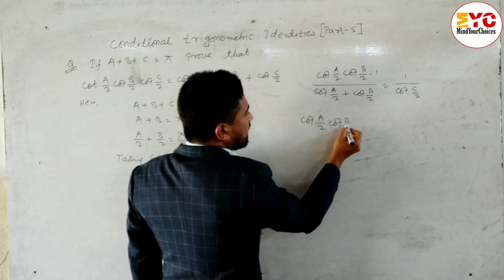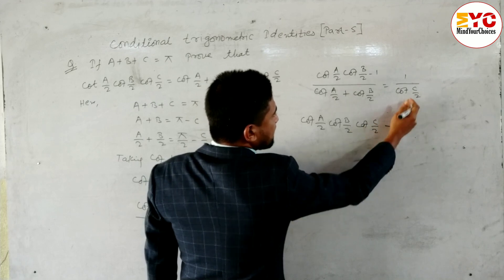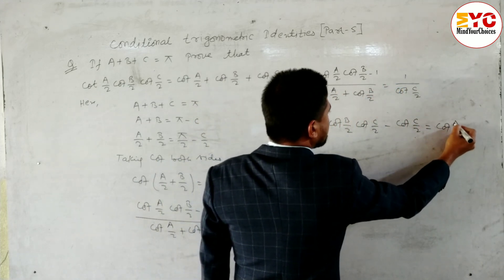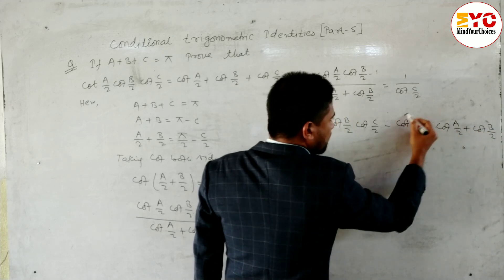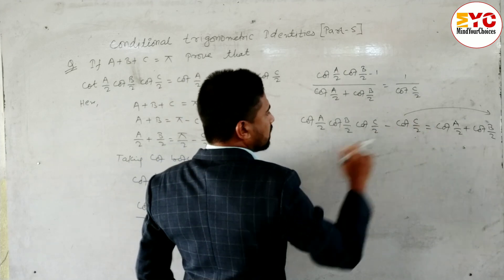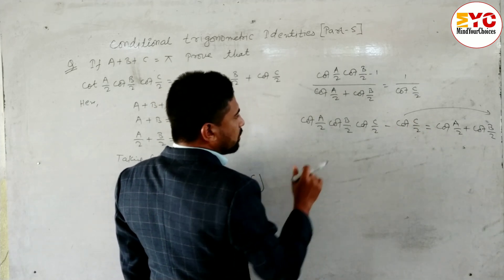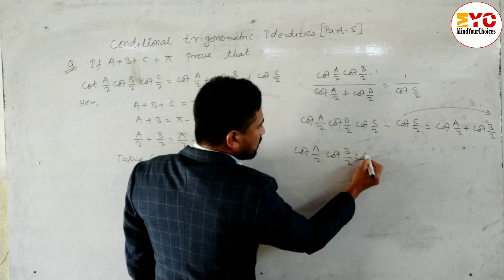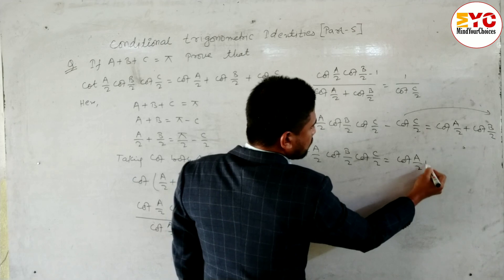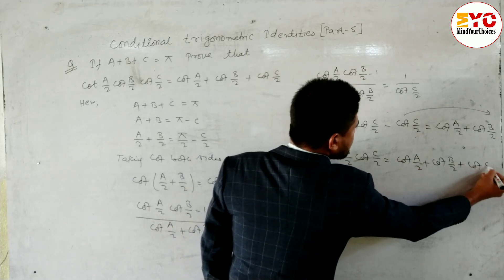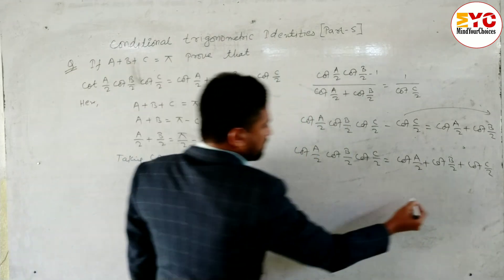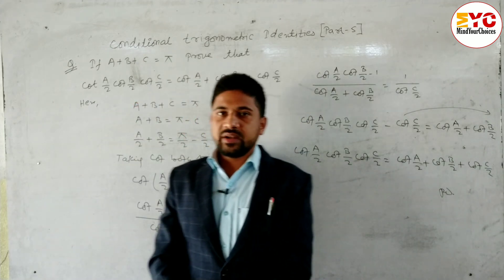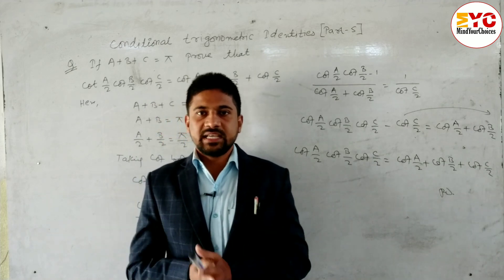Now cross multiply: cot(a/2)cot(b/2)cot(c/2) minus cot(c/2) equals cot(a/2) plus cot(b/2). Taking the minus cot(c/2) to the right side, we get cot(a/2)cot(b/2)cot(c/2) is equal to cot(a/2) plus cot(b/2) plus cot(c/2). Proved! Hope you understand this question on conditional trigonometric identities — this is Part 5 completed.